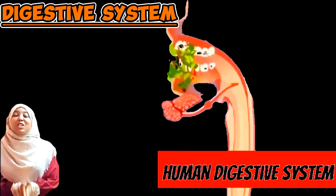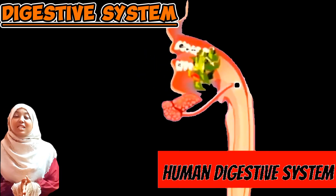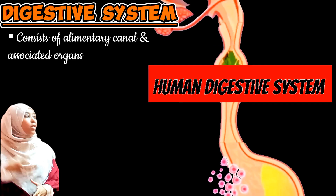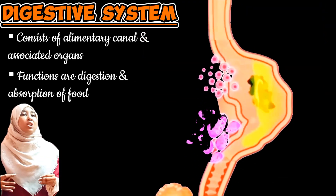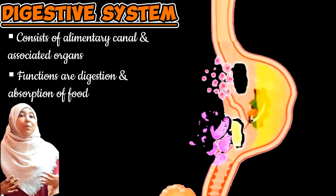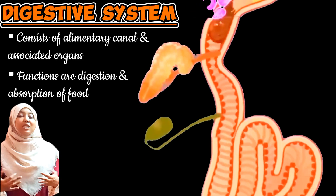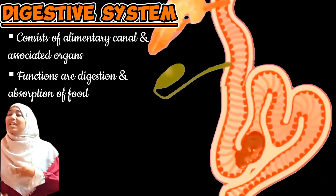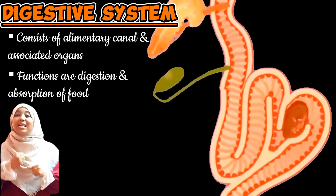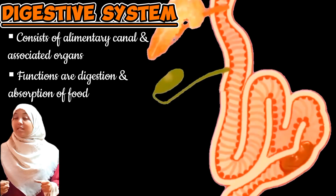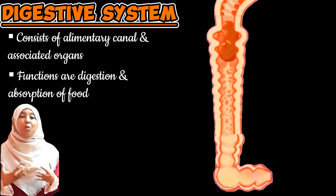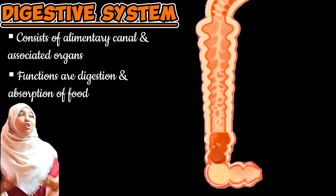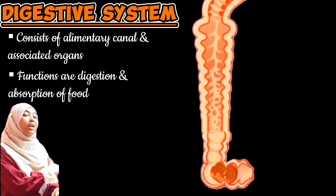The digestive system is a system that comprises organs whose main function is digestion. They break down complex food substances into simple soluble particles that can be easily absorbed and assimilated by cells, meaning the simple molecules can then be easily taken up by cells and utilized for various functions.